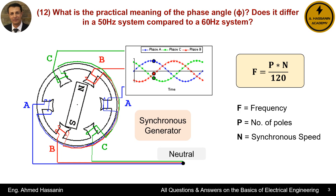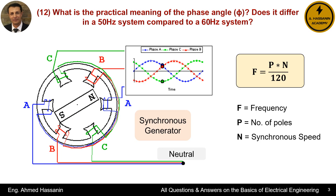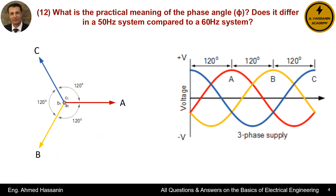A complete cycle corresponds to 360 degrees. Since a complete rotation of the rotor corresponds to 360 degrees, this results in a phase rotation among the three phases A, B, and C, with a 120-degree angle between each pair of phases.